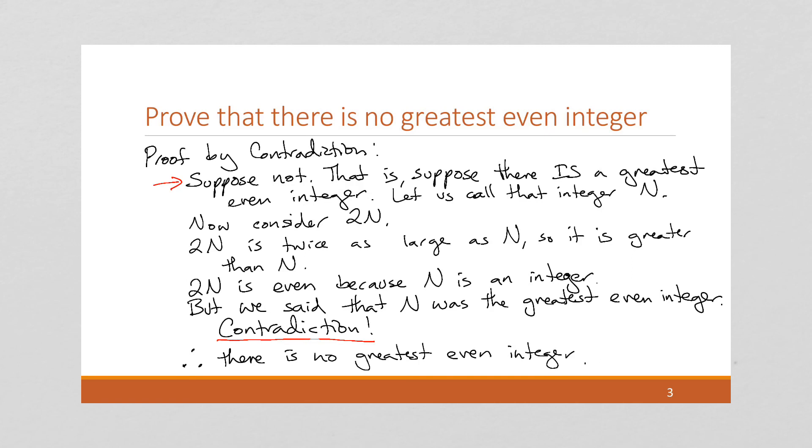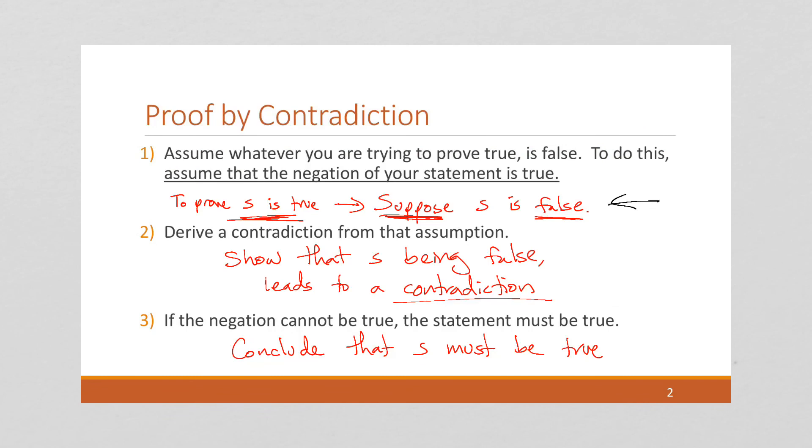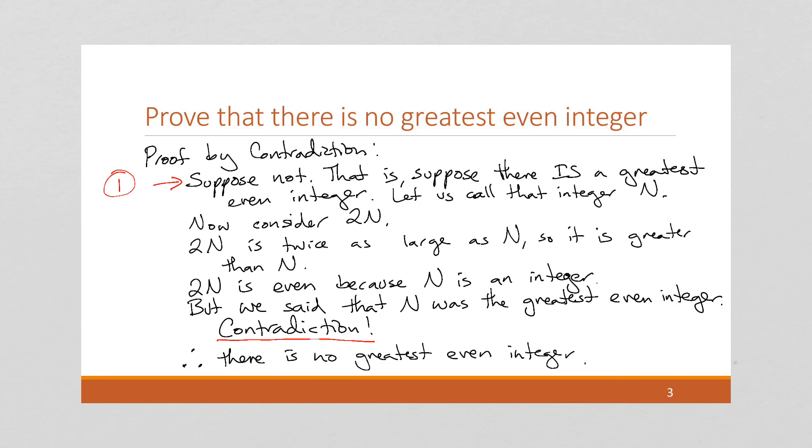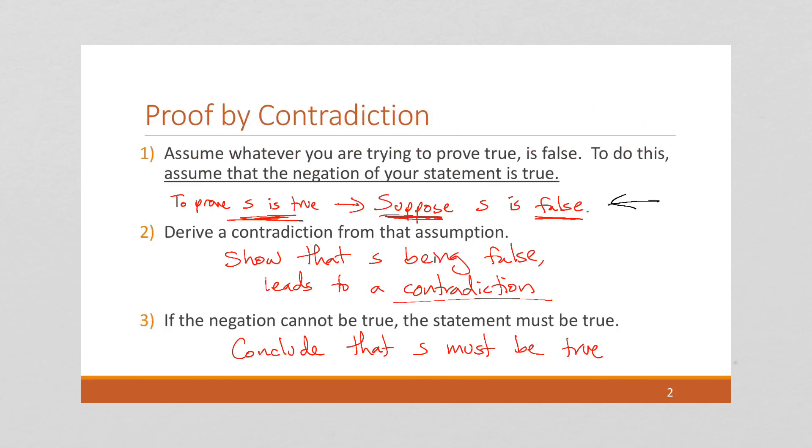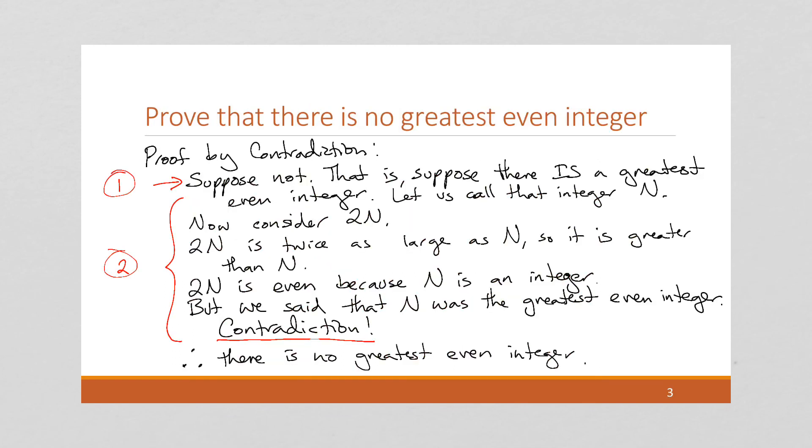Okay. So, if we want to look at the steps, this was step 1. Right? We want to suppose it's false. Step 2 is finding a contradiction. So, this part is all step 2. And then, step 3 was just concluding that we found a contradiction, so the opposite must be true. So, this is step 3.